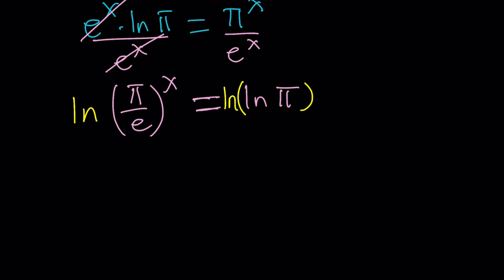Now, when we ln both sides one more time, this x, we're going to bring that to the front. x times ln π over e is going to be ln ln π. So double ln.